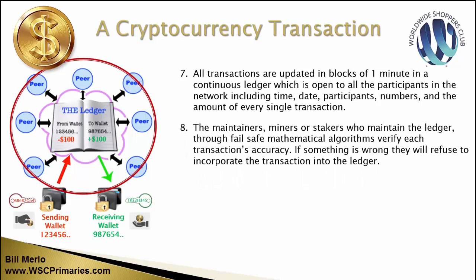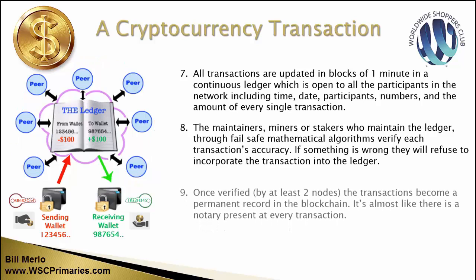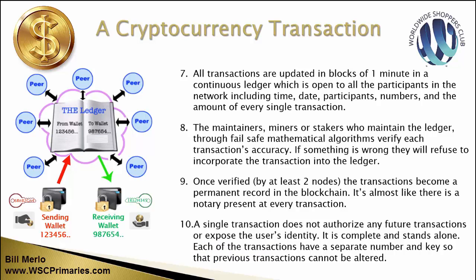We have maintainers - people who keep the ledger accurate. They maintain it through a safe mathematical algorithm that verifies each transaction's accuracy. If something is wrong, they refuse to incorporate the transaction into the ledger. Miners or stakers out there verify the transaction, and when enough of them have verified it, they put a virtual stamp on it - it's like having a notary present at every transaction, except it's the whole network verifying it.